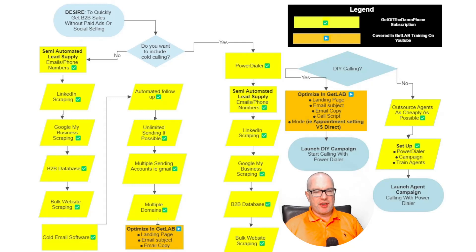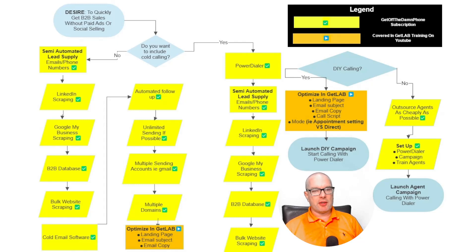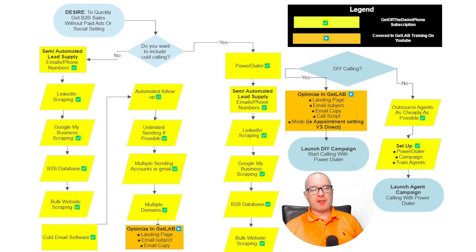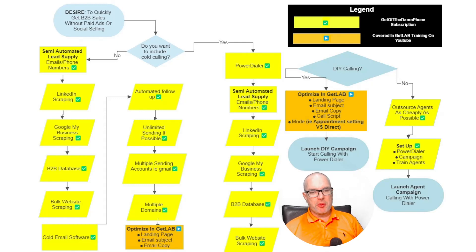With Get Off The Damn Phone you pretty much get unlimited sending anyway. You want to have multiple sending accounts — in Gmail or Google Workspace for example — so that you can rotate them and you're not sending everything from your main account. You also want multiple domains as well, so you don't want to be sending from your main domain because you'll get blacklisted and won't be able to send any more emails. So you want to keep your own domain fresh, and we're going to show you how to do that.